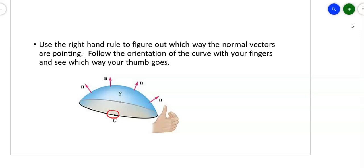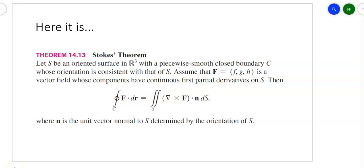Here's Stokes' Theorem. I've got a vector field F, G, H. I've got the del operator — that gradient symbol with partial X, partial Y, partial Z. I'm going to do a cross product with the vector field, take that answer, and then do a dot product with the normal vector, the normal vector being the one that points out from the surface. My claim is that that's the same thing as doing a simple line integral by Stokes' Theorem.